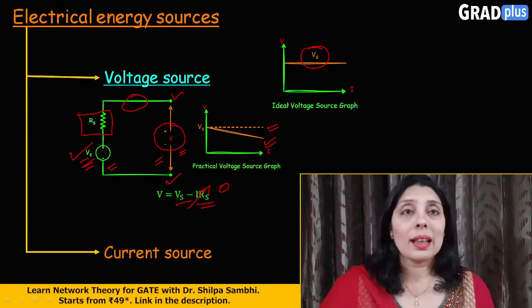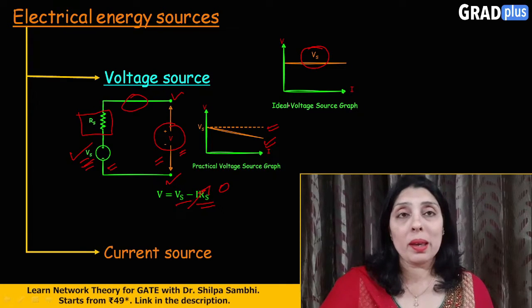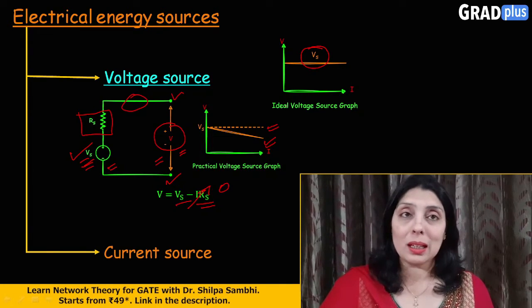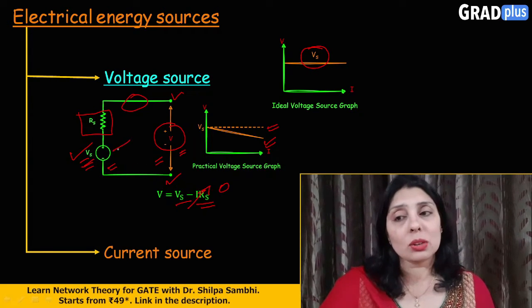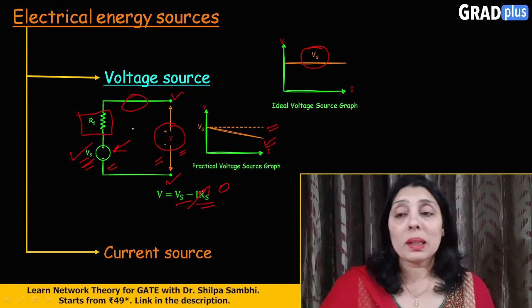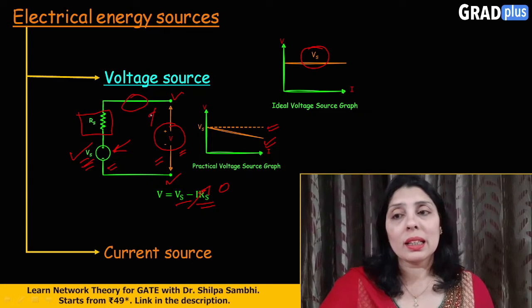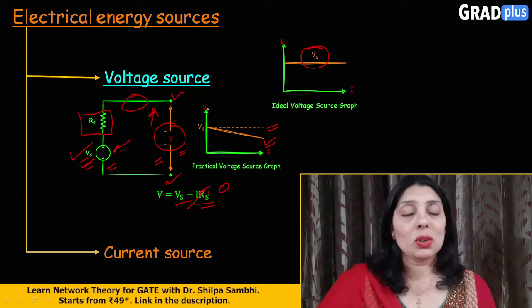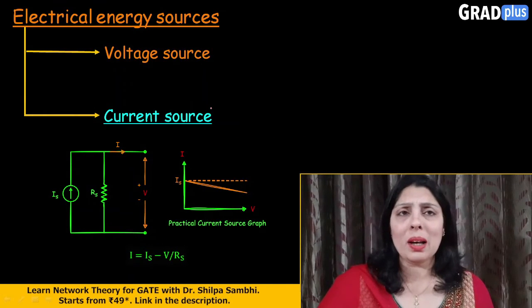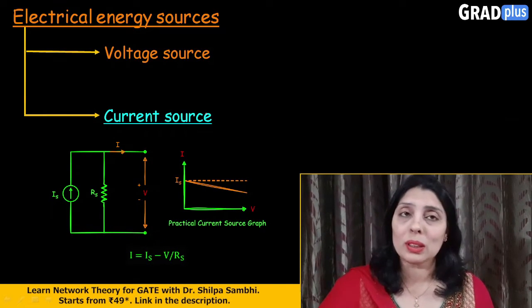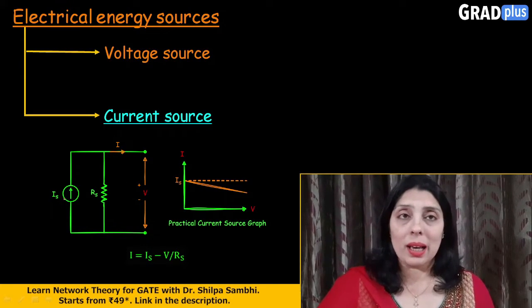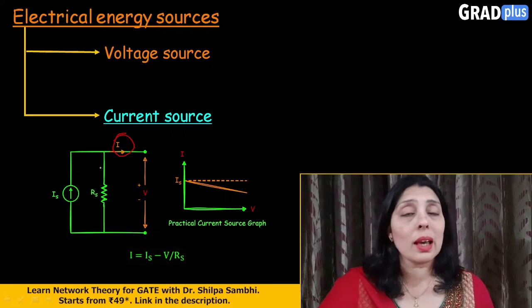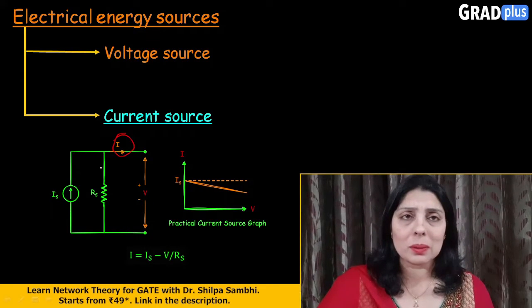But remember here that such ideal sources only appear in the theoretical concepts. Practically, you will always get resistance in the form of the components which are constructing this voltage source here and the material which is used in manufacturing these conducting lines. Now, let's talk about the current source. In the similar way like we have discussed about the voltage source, the same things, the similar things will be coming up here also. So, what is the current source? Current source is basically a device which is supposed to provide constant current as an output to the desired branch.